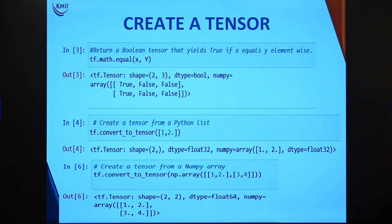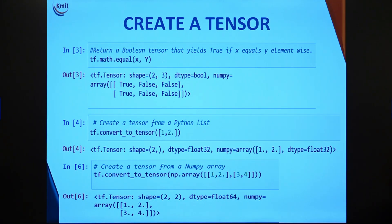You can also create a tensor from a Python list. Here the list contains mixed data types — an integer and a float, for example [1, 2.0]. Use tf.convert_to_tensor and pass the list as a parameter. The shape of the resulting tensor is (2,) and the data type is automatically set to float32 because a float value was included.